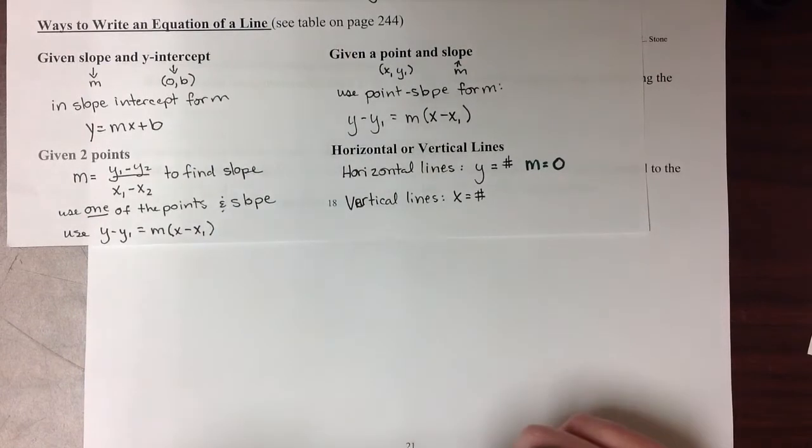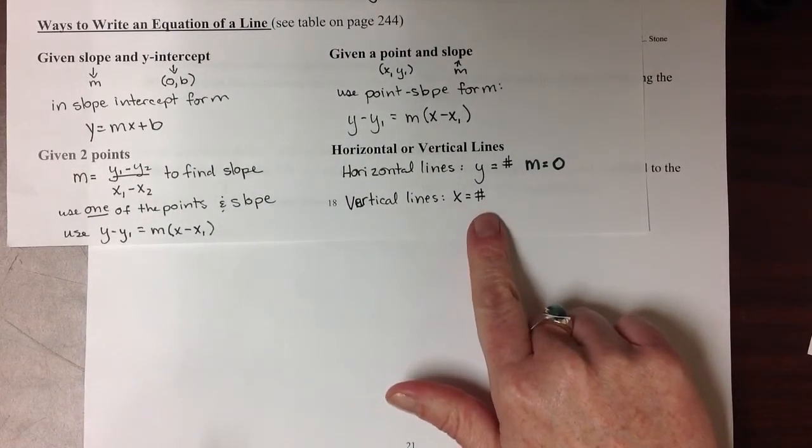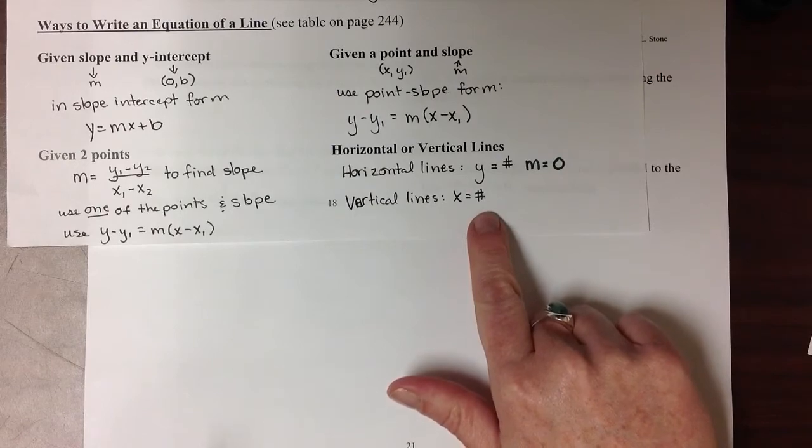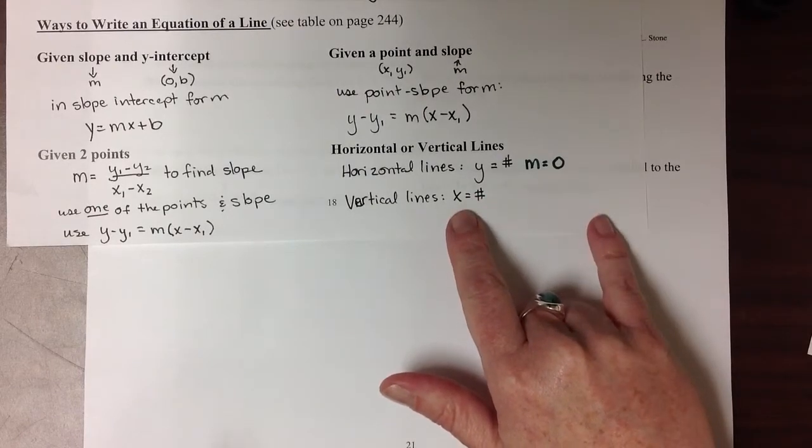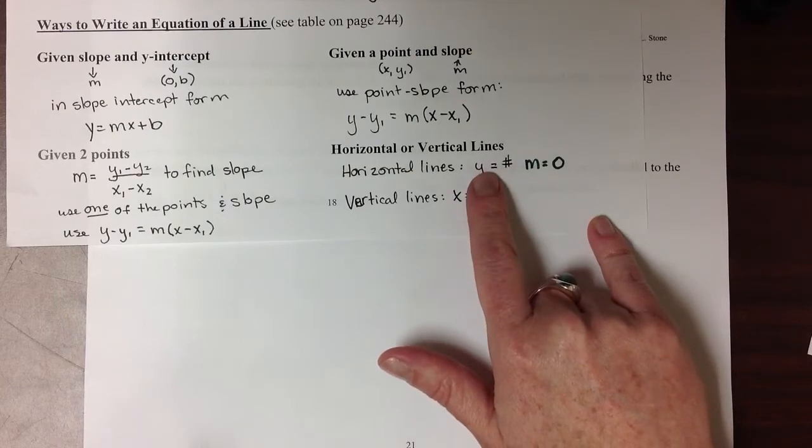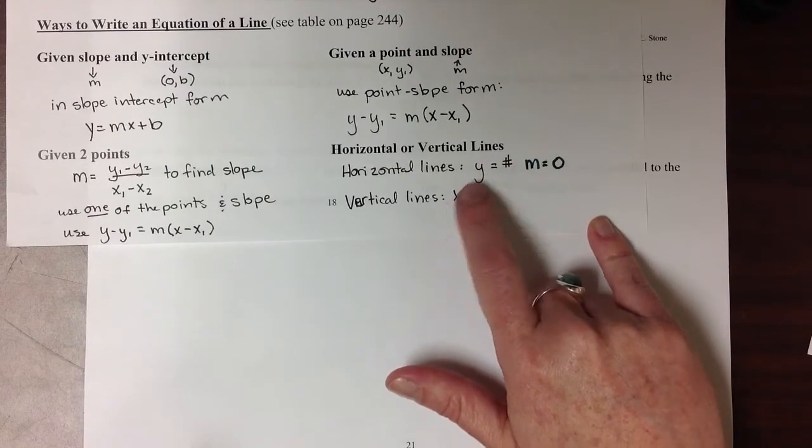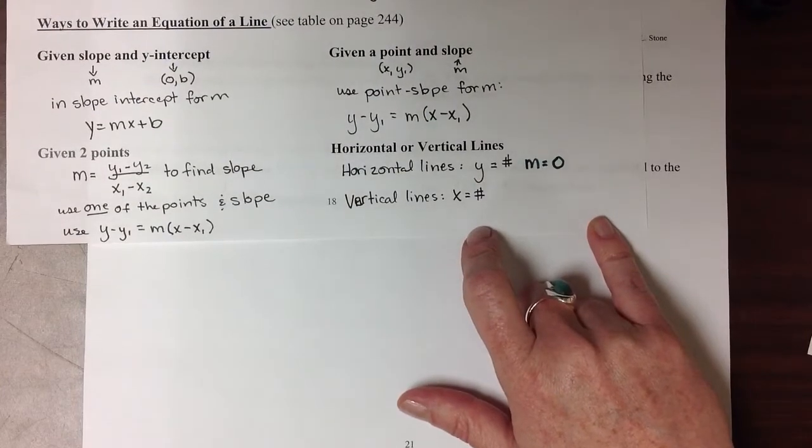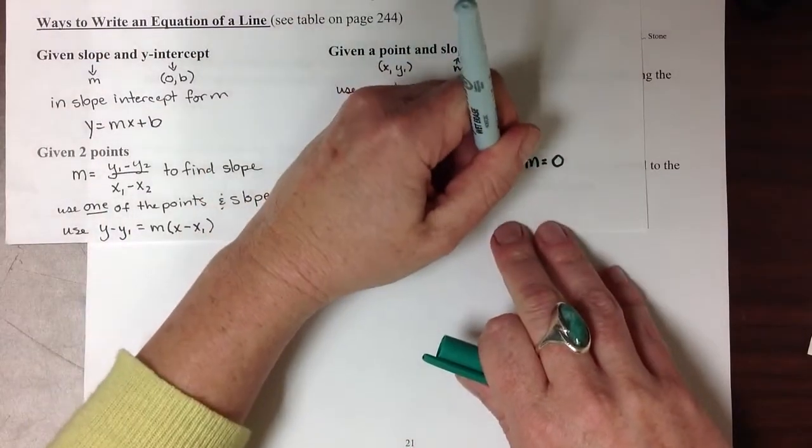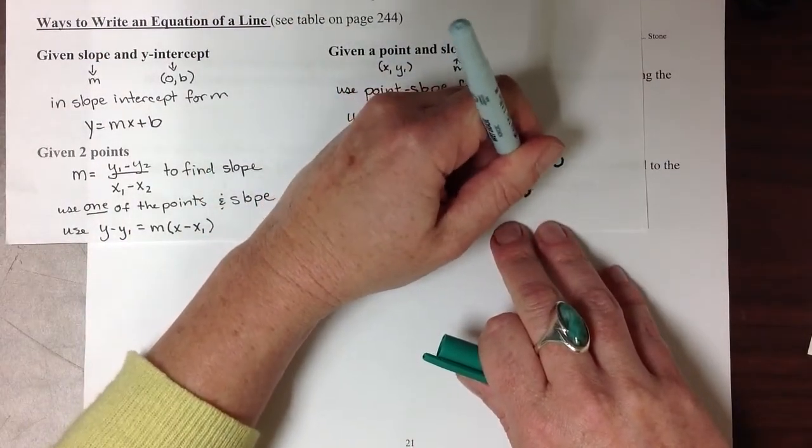Vertical lines all come in the form x equals some kind of number. And in these problems it's impossible to put them into the point-slope form since they don't have a slope or an intercept. So on these, the slope is undefined.